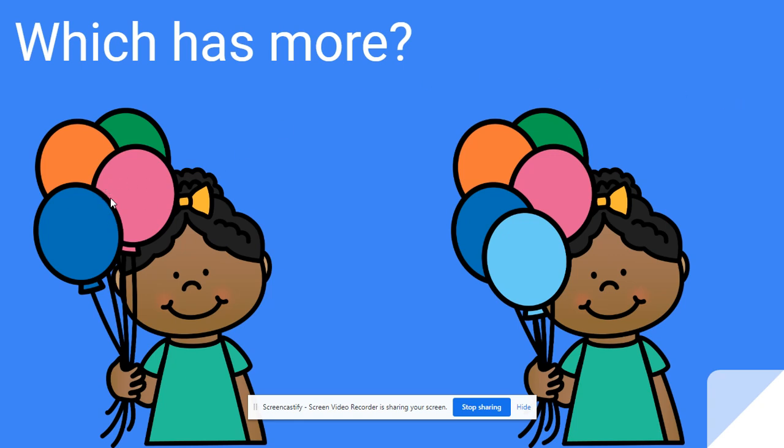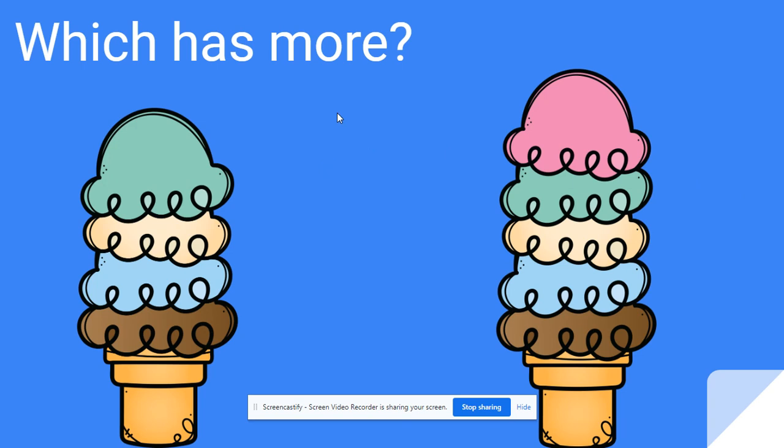Well, I see that this girl on the left has four balloons, and this girl has five. I see that there are four scoops of ice cream over here, and there are five scoops over here. So this group has more.